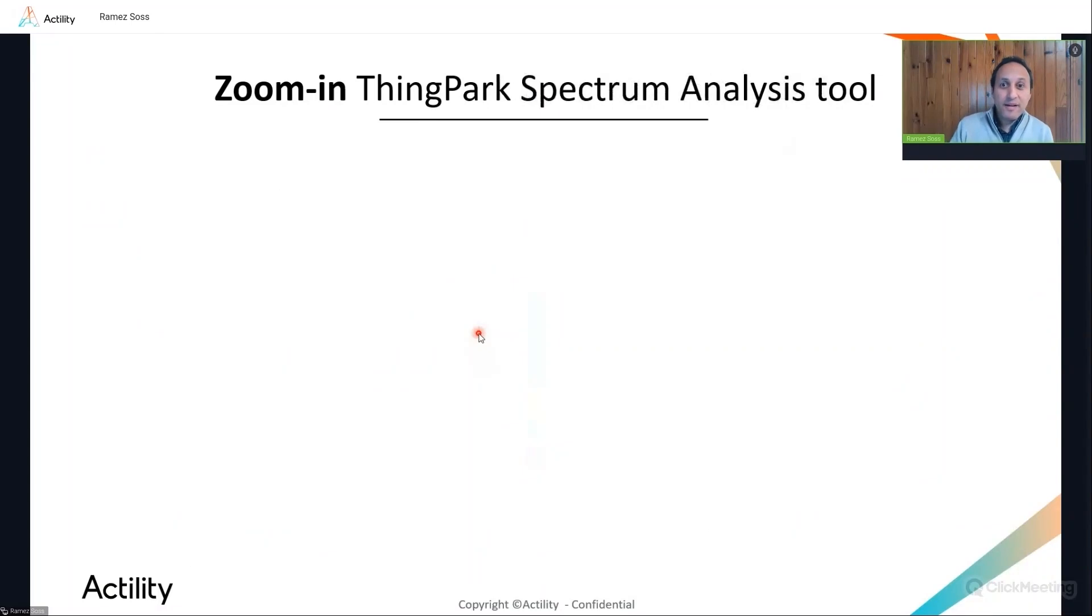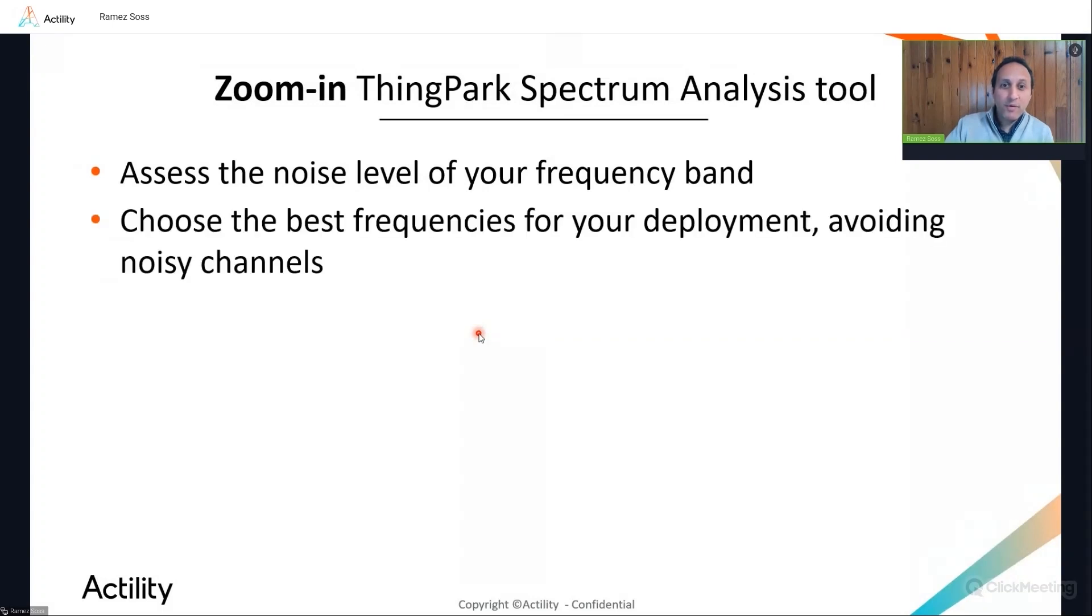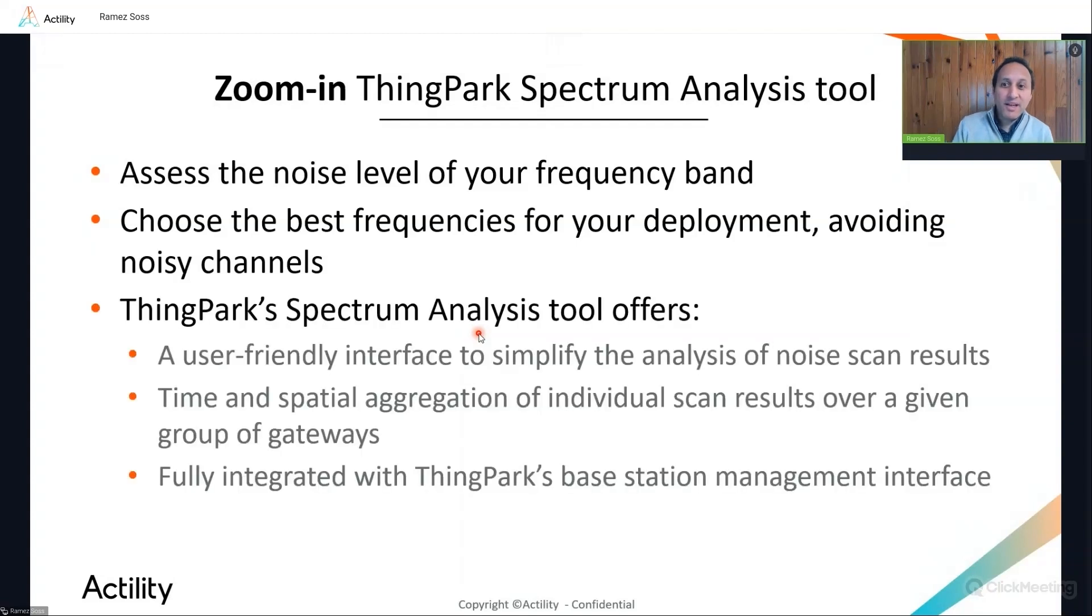And finally, the ThinkPark spectrum analysis is another member of the family of network tools. This tool helps you easily estimate the noise level of your frequency band and choose the best frequencies for your deployment by avoiding noisy channels. The spectrum analysis tool is seamlessly integrated with your ThinkPark gateway management portal. Therefore, you can easily launch your noise scan campaign from your gateway management portal and then view the results in the spectrum analysis tool. Not only you can analyze the scan results of individual gateways, but the tool also allows you to do time and spatial aggregation of individual scan results over a given group of gateways. Such aggregation is indeed very useful to provide you statistically relevant insight about the interference level of a given geographical zone, since the RF channel planning is generally consistent across a full zone, not personalized specifically and separately for each gateway.